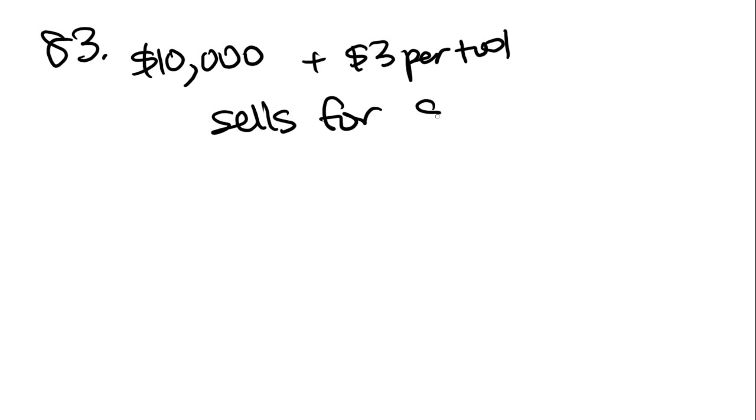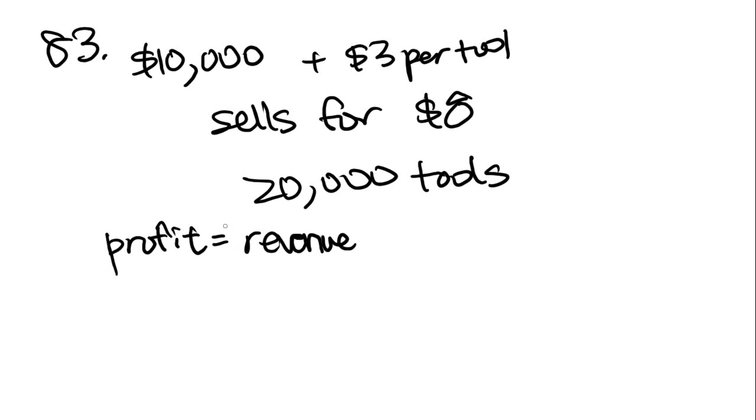Number 83 says, let's see, the total cost for Company X to produce a batch of tools is $10,000, plus $3 per tool. Each tool sells for $8. Gross profit earned from producing and selling these tools is the total income from sales minus the total production cost. They have a batch of 20,000 tools, so there's 20,000 tools, is produced and sold, what was the profit? So we know that the profit is going to be revenue or amount of sales and all that stuff minus cost of the items. In this case, let's figure out what the revenue is first.